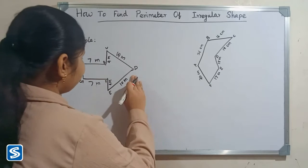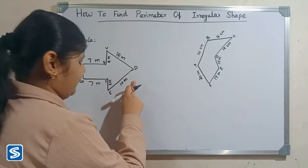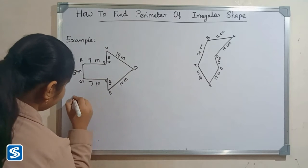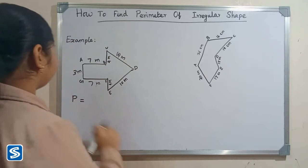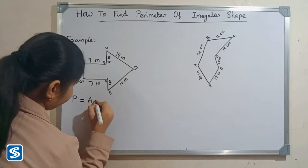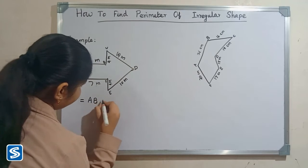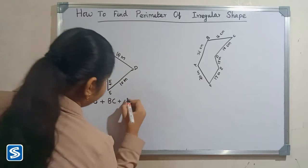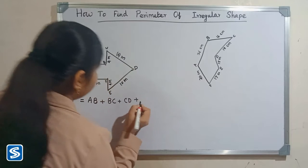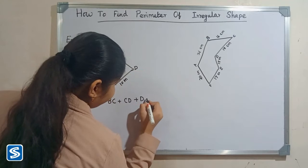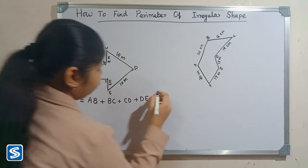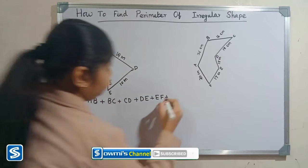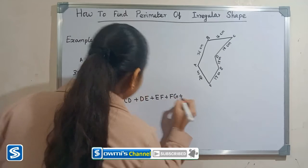Next example: this is an irregular shape and we have to find the perimeter of this irregular shape. To find the perimeter, we just have to add the length of all the sides. Here the sides are AB plus BC plus CD plus DE plus EF plus FG plus GA.